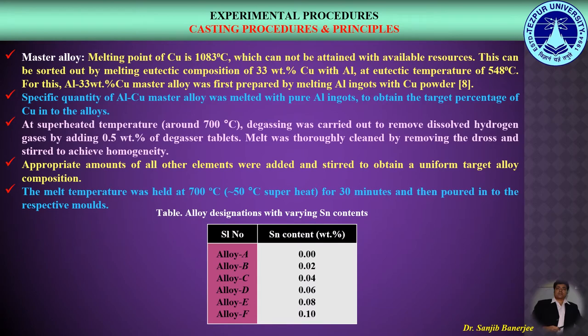In the present study, 2219 aluminum copper alloy was processed by standard casting technique. It contains varying contents of tin, with tin content varied from 0 to 0.1 weight percent, as shown in this table.